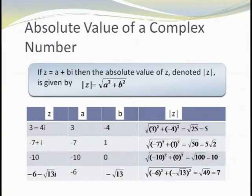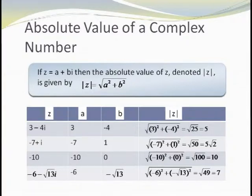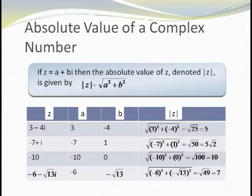Our third operation is the absolute value of a complex number, sometimes called the modulus. If z equals a plus bi, we define the absolute value of z as the square root of a squared plus b squared. Notice that the absolute value of z is always a real number. Here are a few examples. If z equals 3 minus 4i, then a equals 3 and b equals minus 4, so the absolute value of z is the square root of 9 plus 16, which is 5. If z equals negative 7 plus i, the absolute value equals the square root of 49 plus 1, which is 5 square roots of 2. If z equals negative 10, the absolute value is the square root of 100, which is 10.